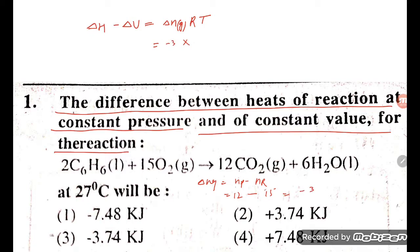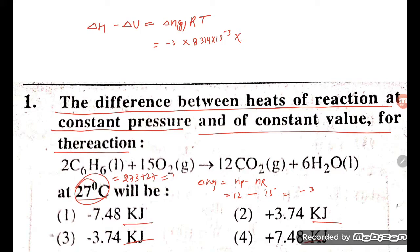So here I am writing minus 3. For the R value, since the units are in kilojoules, we take R as 8.314 × 10⁻³ kJ/mol·K. Temperature is 27°C, which means 273 + 27 = 300 Kelvin. So we multiply by 300 Kelvin.